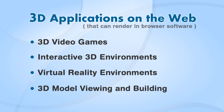Another usage example is interactive 3D environments — something like Google Earth, or any type of application where you let a user navigate through a 3D scene or 3D environment that has 3D models in it and allow them to interact with them. Another example would be virtual reality environments, which work with virtual reality hardware. Another usage example would be 3D model viewing and building — it's possible to create software that allows a user to build 3D models and 3D environments.